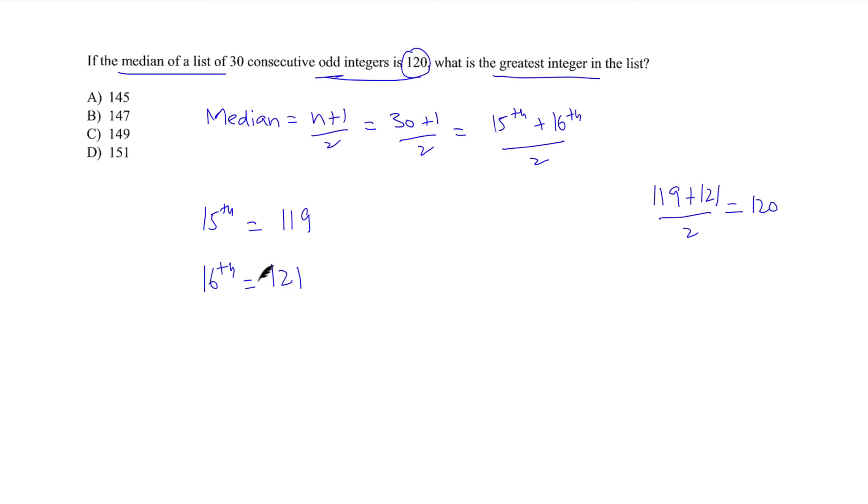So we have our 16th term. Now we can calculate the greatest integer. If we have to go to the 30th term, the greatest integer should be 121 plus 14 other terms, but it is an odd integer series. So we have 121 plus 14 into 2. This will basically give us the greatest integer and the answer should be 149, that is option choice C.